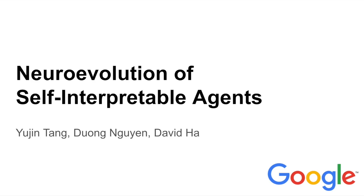Hi, I'm Yujin from Google Brain Tokyo. In this presentation, I'm going to talk about our latest work on neuroevolution of self-interpretable agents. This is a joint work with my colleagues Zhong Guen and David Ha.